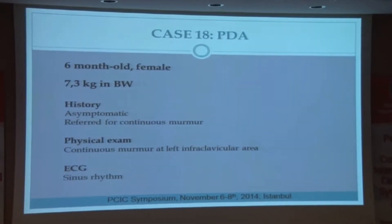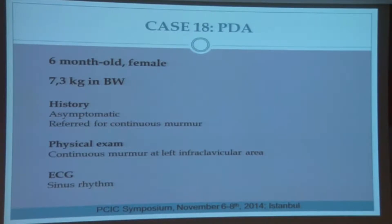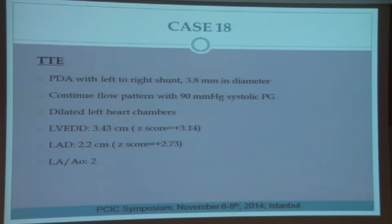Our patient is an eight-month-old female weighing 7.3 kilograms. She was asymptomatic but referred for evaluation of a continuous murmur at the left infraclavicular area. ECG was sinus rhythm. Transthoracic echocardiography demonstrated a patent ductus arteriosus measuring 3.8 mm at its narrowest point with left-to-right shunt. CW Doppler showed continuous flow with a 90 mmHg systolic pressure gradient. Left heart chambers were dilated.